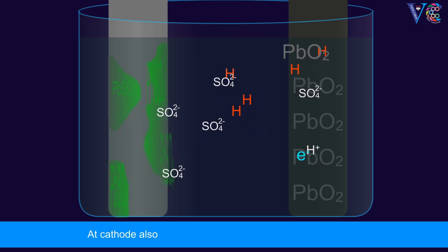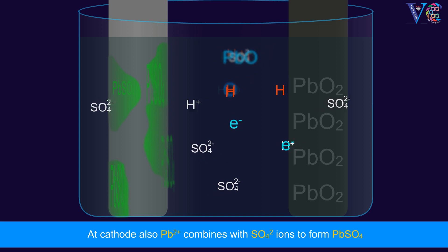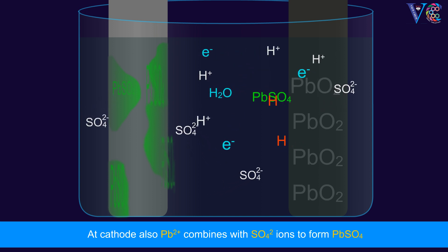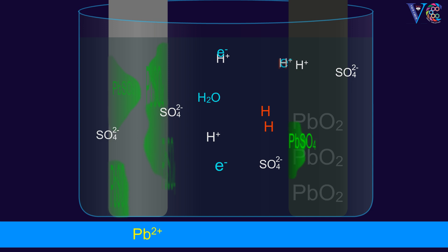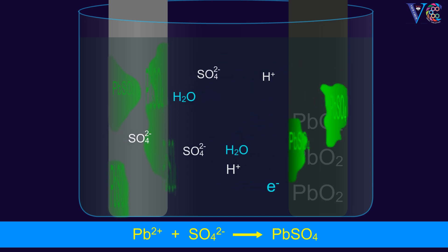At cathode also, Pb2+ combines with sulfate ions to form PbSO4. The net reaction is shown.